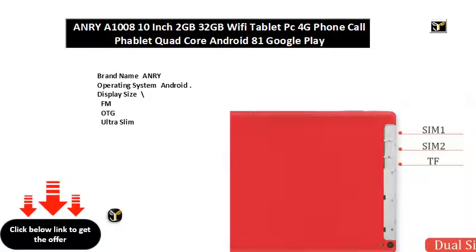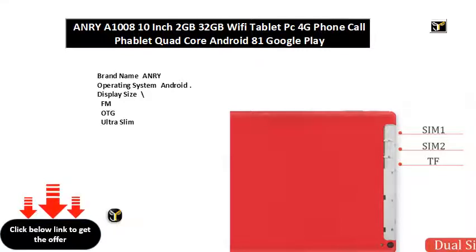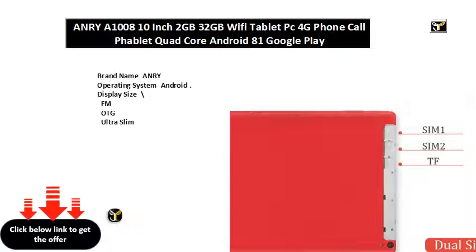Touch screen type capacitive screen. Item type tablet PC. Panel type IPS. Camera second webcam. Second webcam pixels MP. Processor core. Processor manufacturer MTK. Google Play yes. Package yes. Display resolution X. Cell capacity mA.